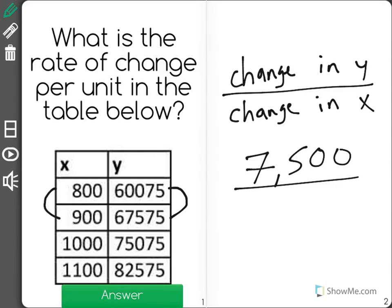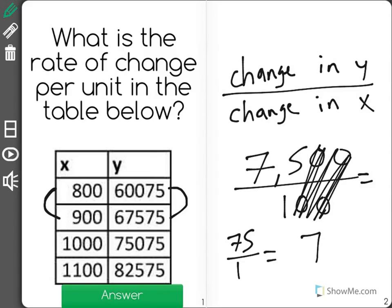And in that same exact change, we have 800 to 900, there's a change of 100. When I divide these two, 7,500 divided by 100, I could just remove the zeros, get 75 over 1, which is a rate of change of 75.